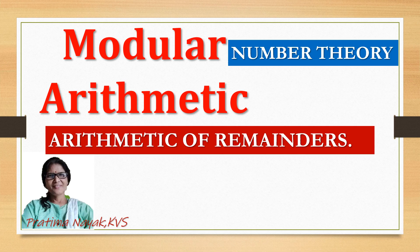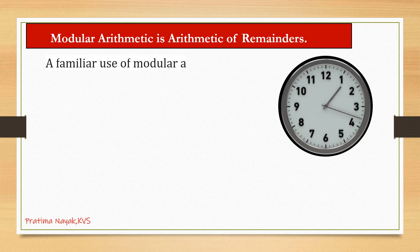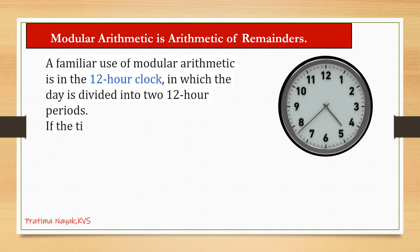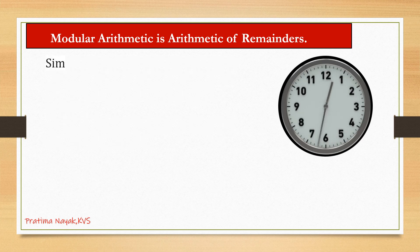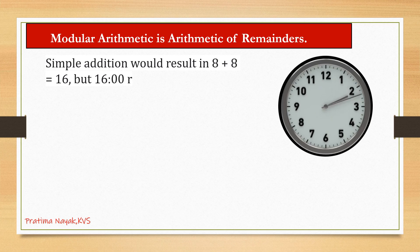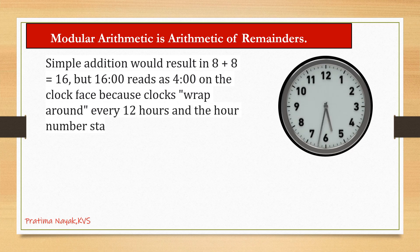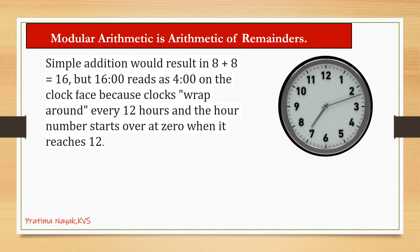Modular arithmetic is nothing but arithmetic of remainders. A very familiar use is in the 12-hour clock, in which the day is divided into two 12-hour periods. If the time is 8:00 now, then 8 hours later it will be 16. But do we say it is 16? Simple addition would result 8 plus 8 equals 16, but 16 hours reads as 4 on the clock face because clocks wrap around every 12 hours and the hour number starts over at zero when it reaches 12.